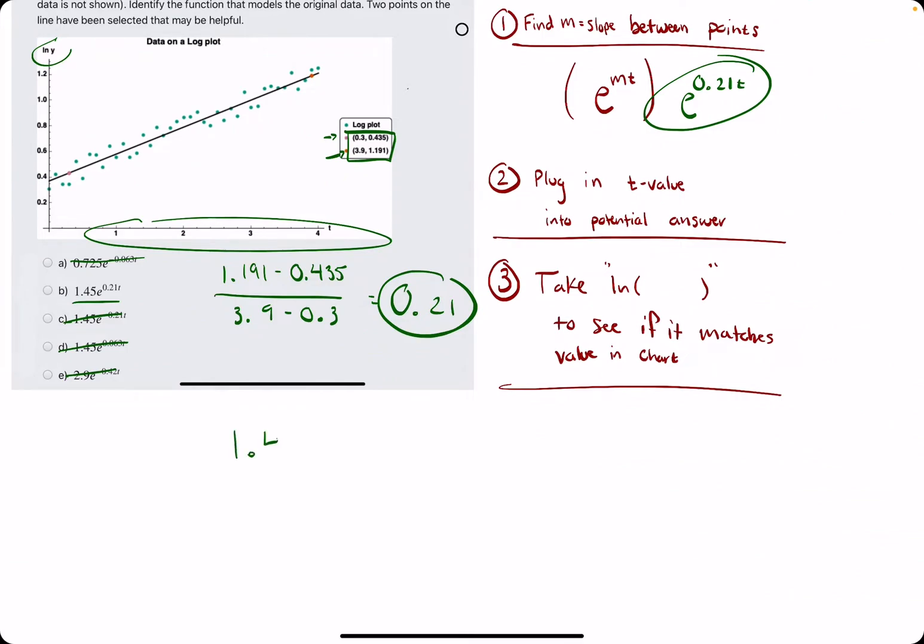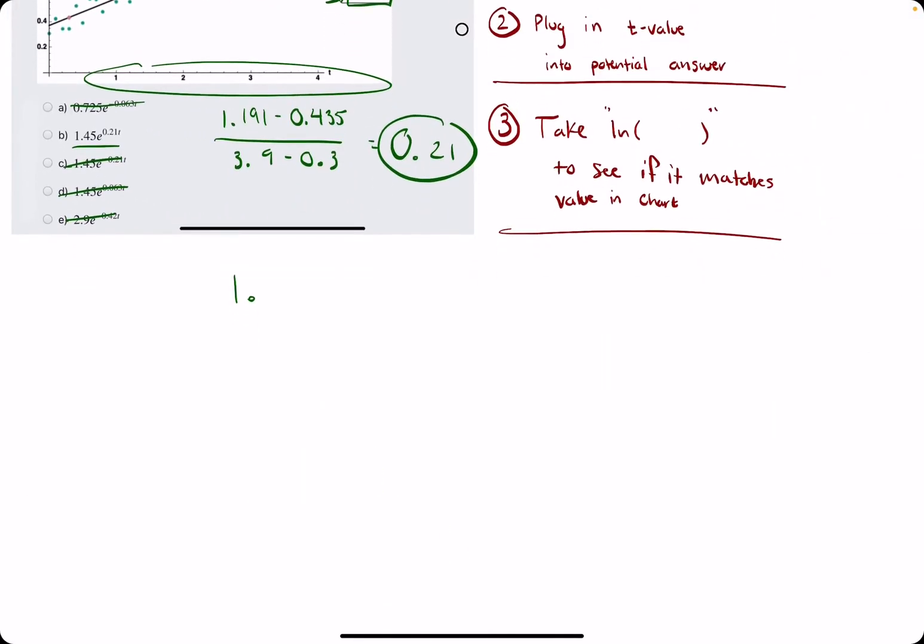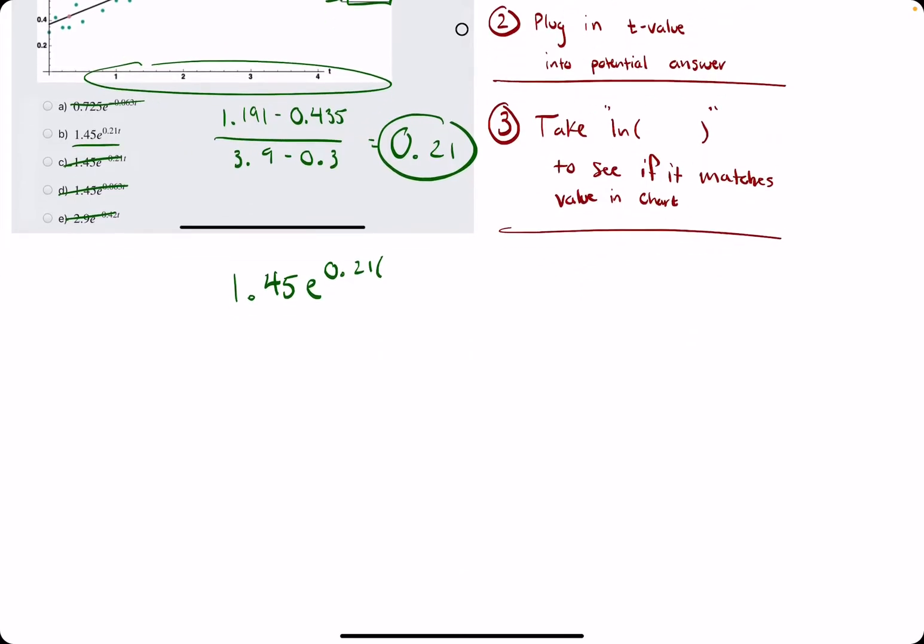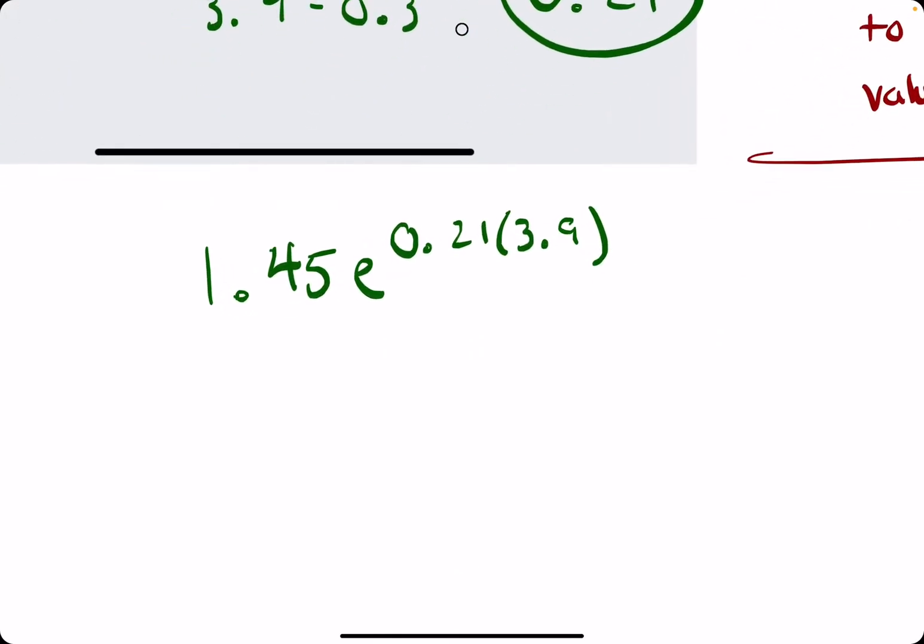And we're plugging in 3.9 into option b for t. We will have 1.45e to the 0.21, and we're plugging in 3.9 for t.